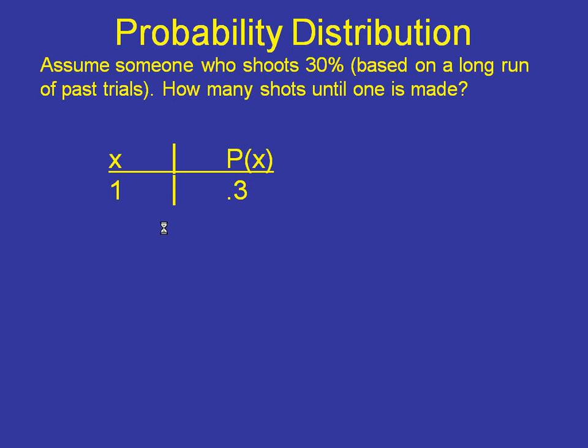The chance that they make their first shot on their first shot is, of course, 30%. But what's the chance that they don't make their first shot until their second try? That would mean that they would miss, which is a 70% chance, and then make their second shot. Because it's an and, you're multiplying. They're independent. 21% chance. The chance that they make it on their third try would be miss, miss, and make. There's your numbers. Multiply. That's what you get.